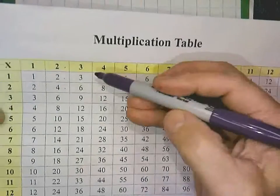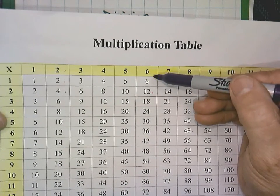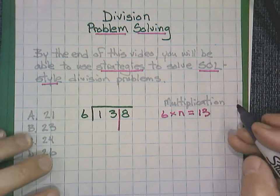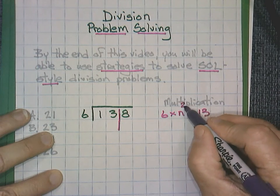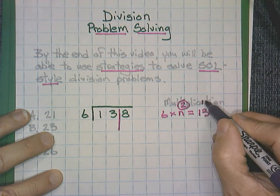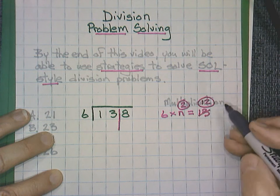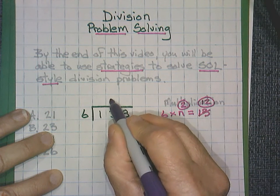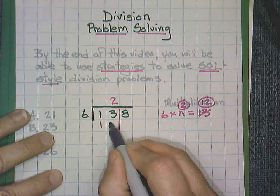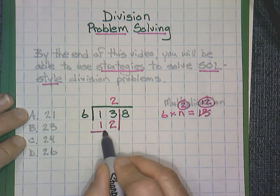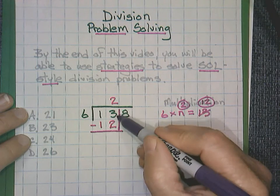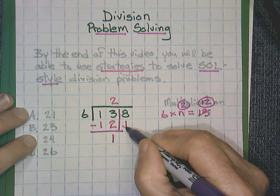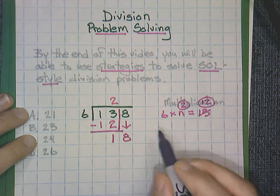6 times n equals 13. I know from my multiplication facts that 6 times 1, 2 will get us to 12. So 6 and 2, not 13, but 12. That's as close as we can get to the 13. I'm going to circle and use both of these numbers. 2 on the top, 12. When I compare, I did get close. I got within 1. I subtract, bring down 8.